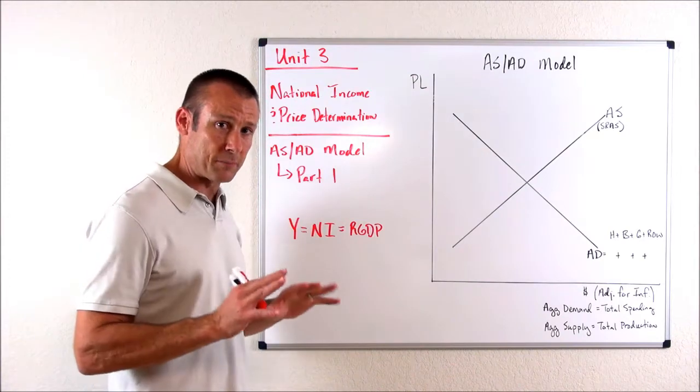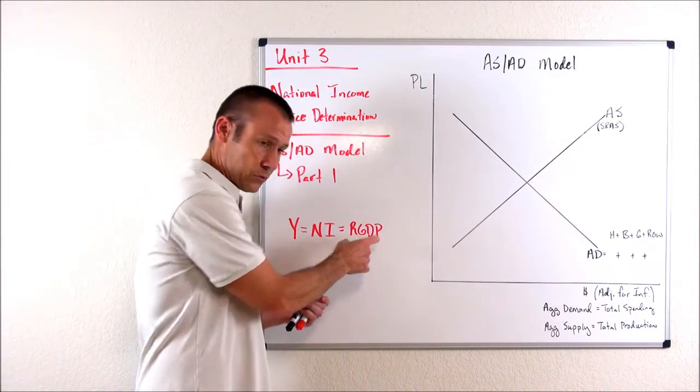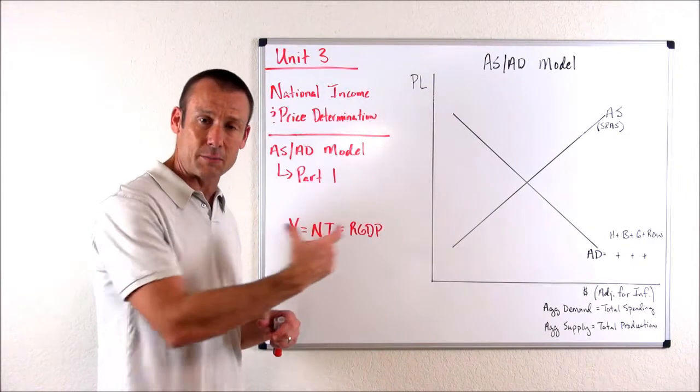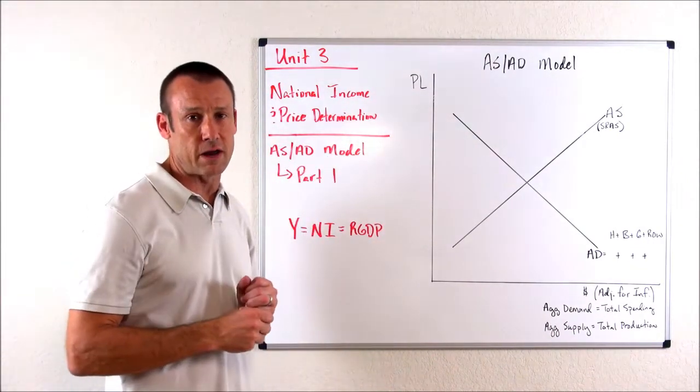As I start to talk about this model, which is what we're going to focus on in this video, I just want to be very clear that when we hear national income, equate that with real GDP, that those are synonymous for us. Once again, the value of what we produce determines our national income.